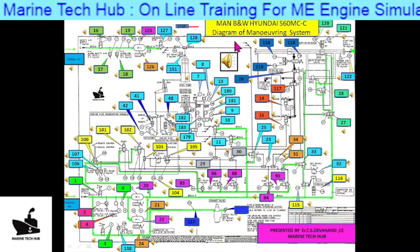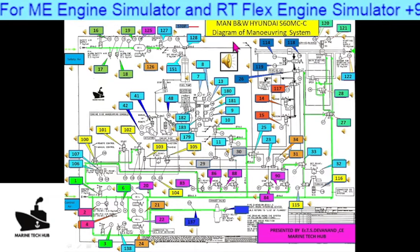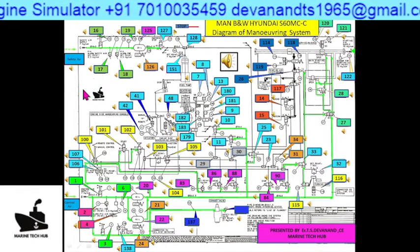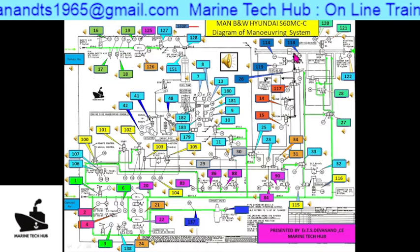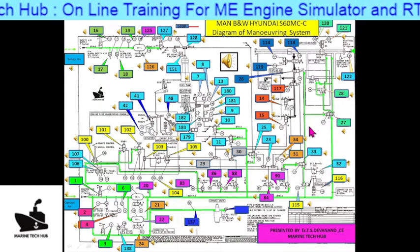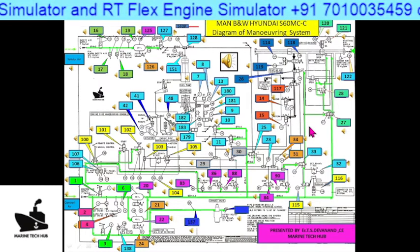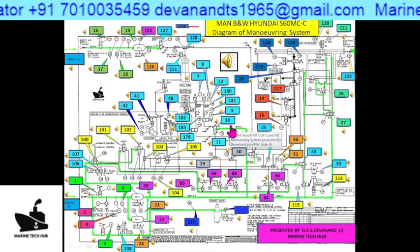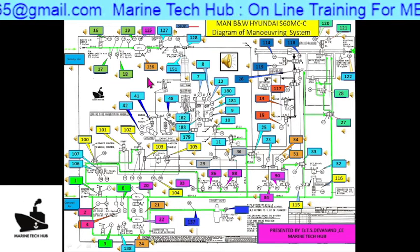This is the manoeuvring diagram. This model is MCC. What I have done is taken photographs of different components at different places. Normally on the ship you will be getting this layout and the components are placed at different places. The diagram is so much complicated, so I have made it simpler so that whenever you want to identify any component, you can just click on the number and go to it. Right now I will tell you a little bit for the beginners, so they will understand how to go through this.